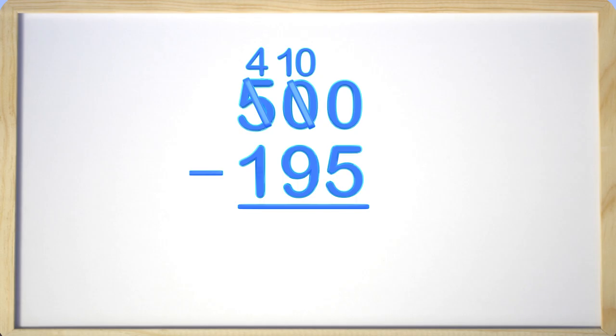You do not stop there, since we need to get to the ones place. We now can borrow from the tens place since there is a ten there. So we borrow one of the tens, and that leaves nine in the tens place. Now we have a ten in the ones place, and we can start subtracting.